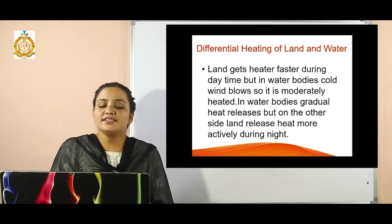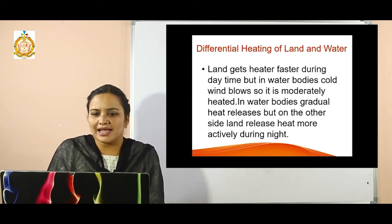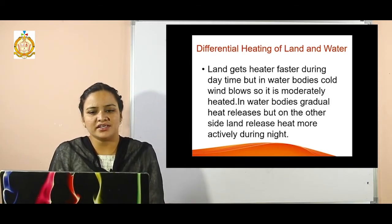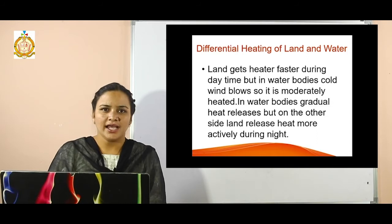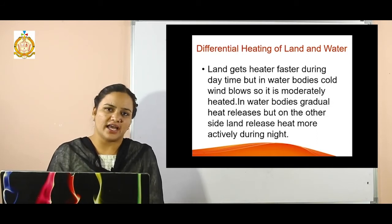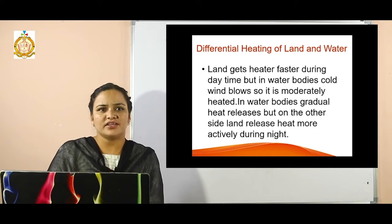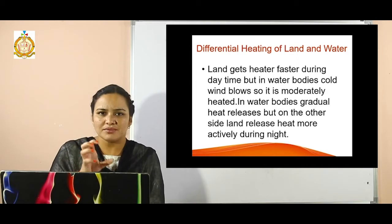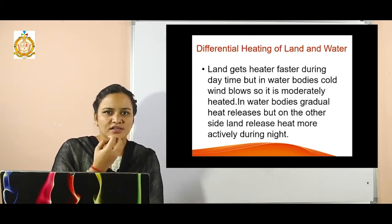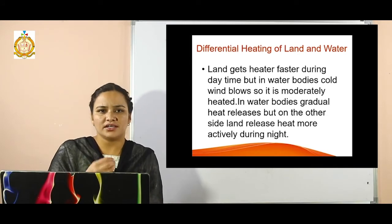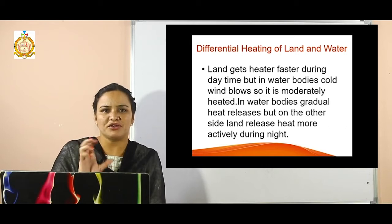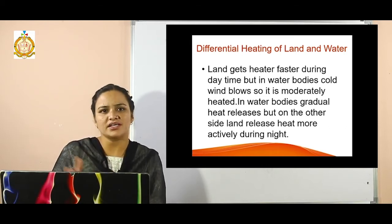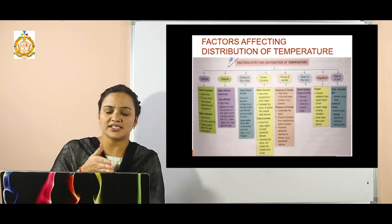The next topic is differential heating of land and water. Land gets heated faster during the daytime, but in water bodies, cold wind blows so it is moderately heated. Land becomes heated faster as compared to water bodies because cold wind is blowing over the water surface, creating a pressure difference between land and water surfaces.